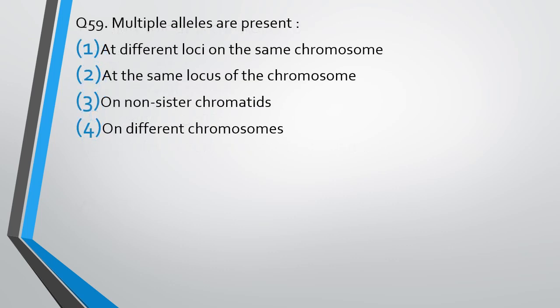Question number 59. Multiple alleles are present: at different location of same chromosome, at same locations of the chromosome, same locus of the chromosome, on non-sister chromatids on different chromosomes. Correct answer is option 2, at the same locus on the chromosome.